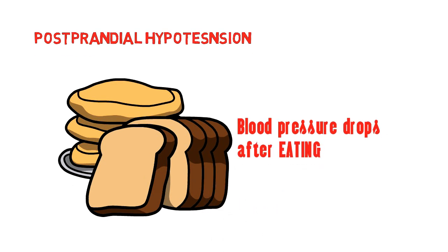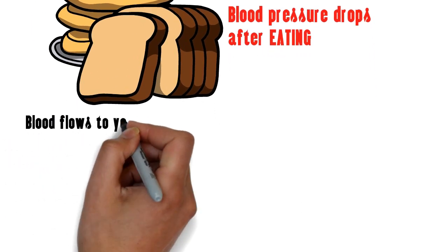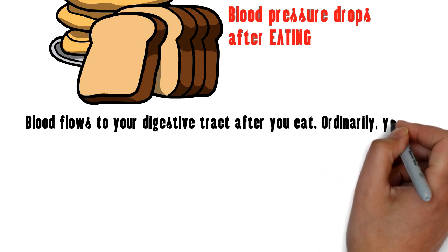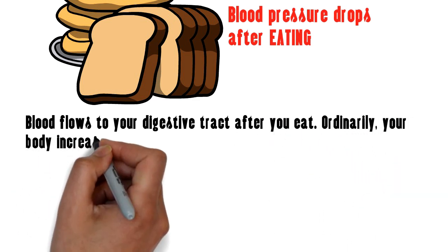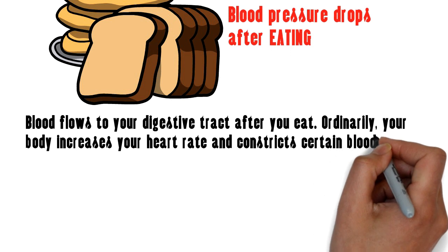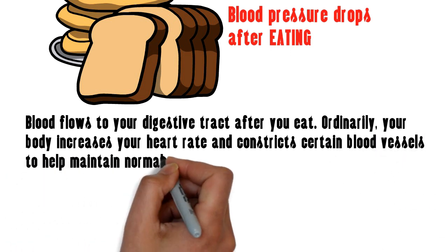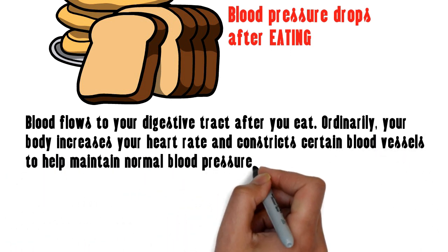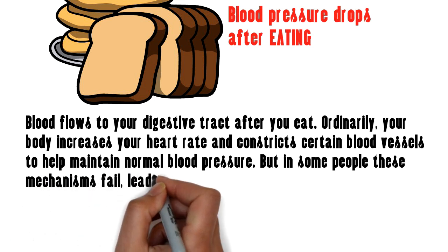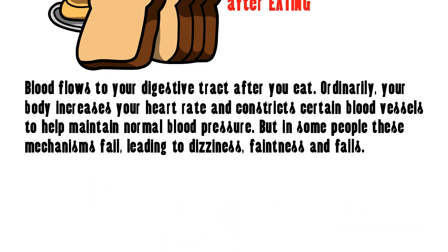Postprandial hypotension affects mostly older adults. Blood flows to your digestive tract after you eat. Ordinarily, your body increases your heart rate and constricts certain blood vessels to help maintain normal blood pressure. But in some people these mechanisms fail, leading to dizziness, faintness, and falls.